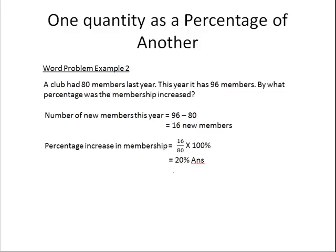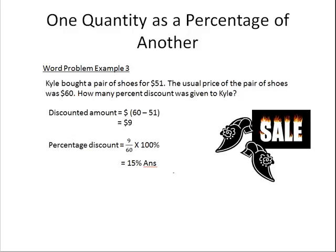Now we look at a similar problem. Example 3: Keele bought a pair of shoes for $51; the selling price of the pair of shoes was $60. So $60 is the old price and $51 is the new, after-sale price. How many percent discount was given to Keele?